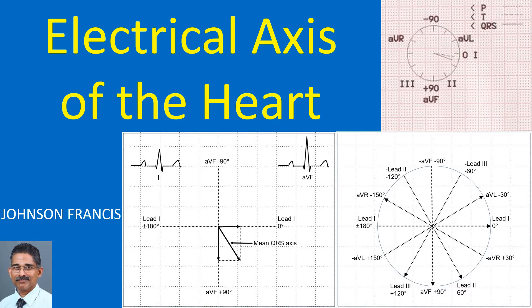Electrical axis can be calculated for the P wave, QRS complex, T wave, and even the ST segment. But when we mention axis deviation, it is usually the mean electrical axis of the QRS complex.